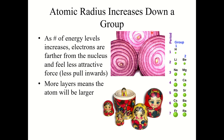The reverse happens when you go down a group. Yes, the number of protons is increasing, but you are adding additional layers or energy levels of electrons. Adding additional levels drastically increases the number of core electrons, which increases shielding. This overcomes the greater number of protons and increases the atomic radius. As you go down a column, the atomic radius increases because electrons are at a higher energy level, further from the nucleus, feeling less attractive force, with greater shielding.